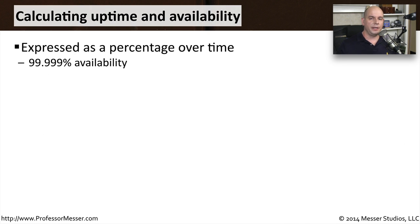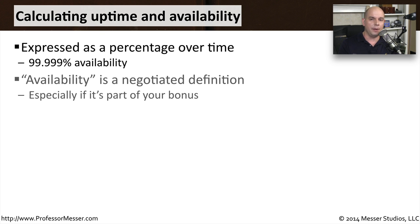When we start calculating availability, it's usually based on the uptime of an application or uptime of an infrastructure, and it's almost always referred to as a percentage of uptime. For example, 99.999% availability — you sometimes hear that referred to as five nines of availability. But just how much availability is the right amount? That number is going to depend on your particular circumstances, and maybe your organization can handle more or less uptime depending on what your services might be.